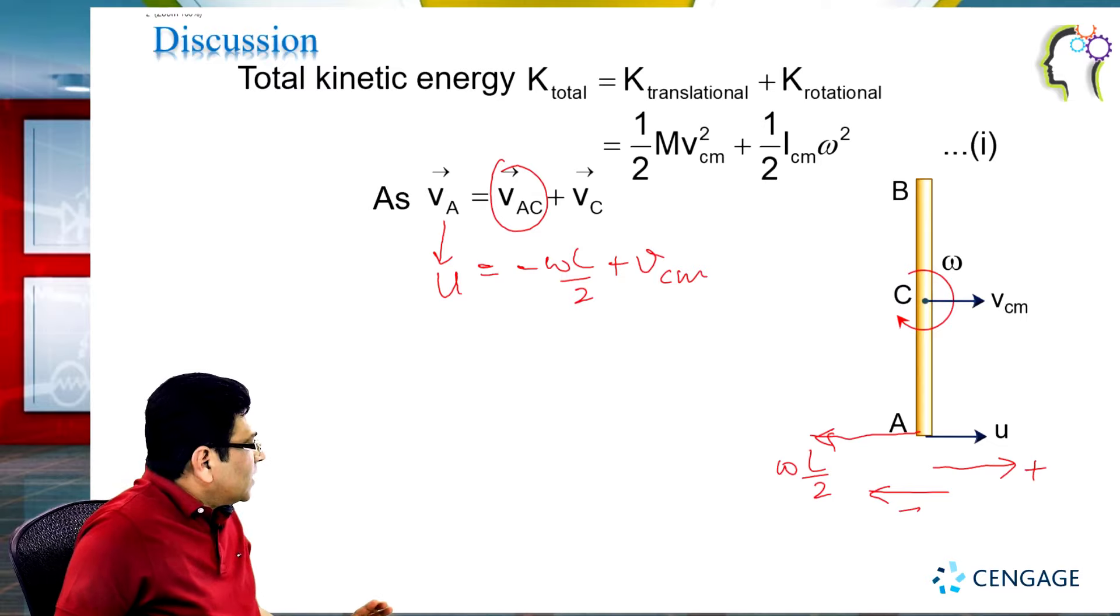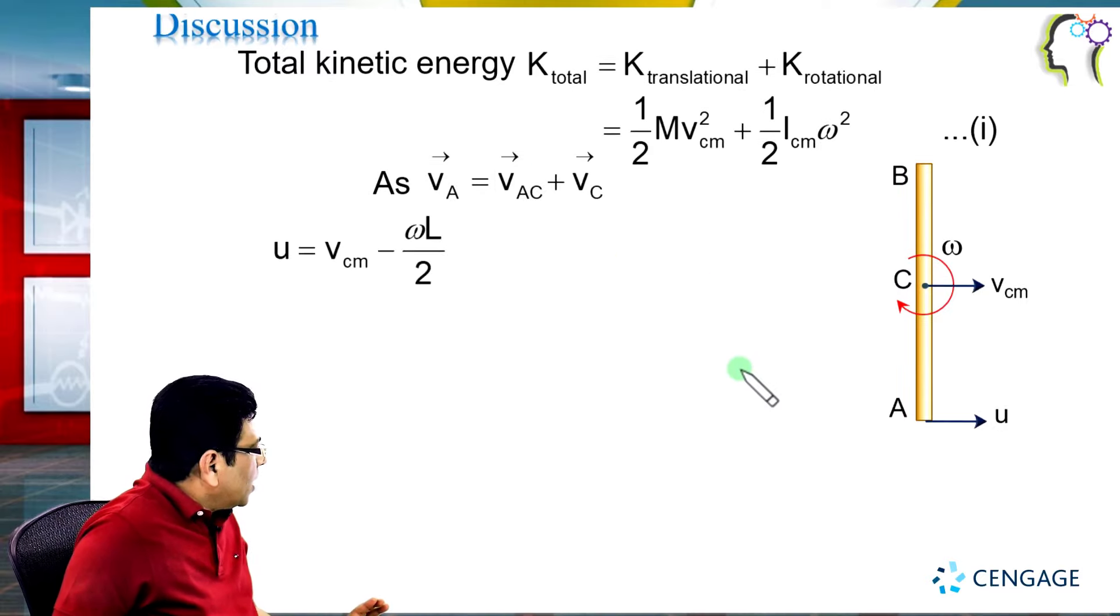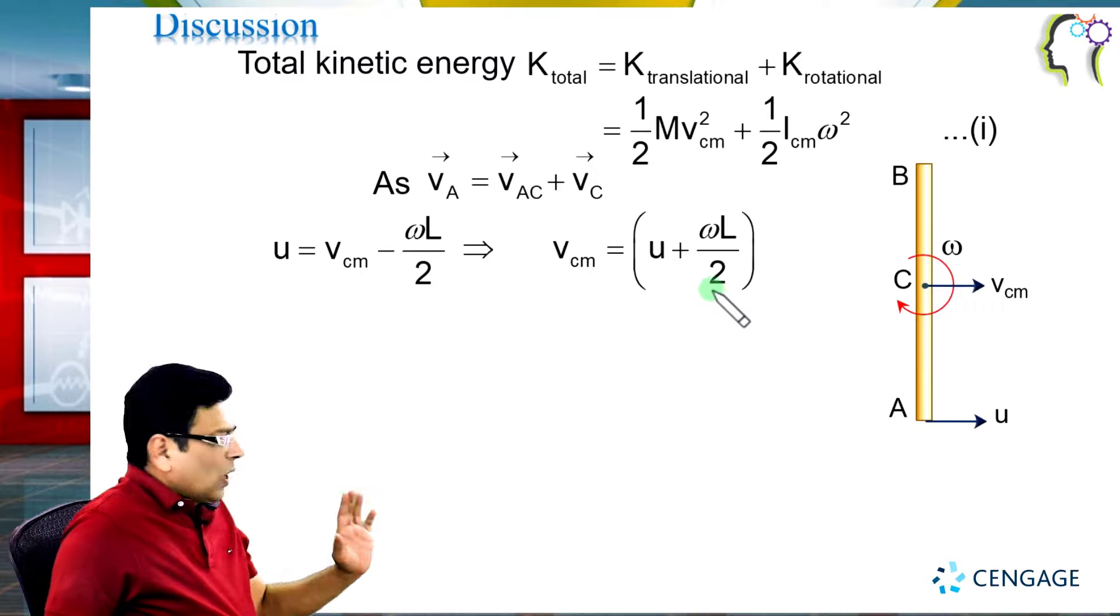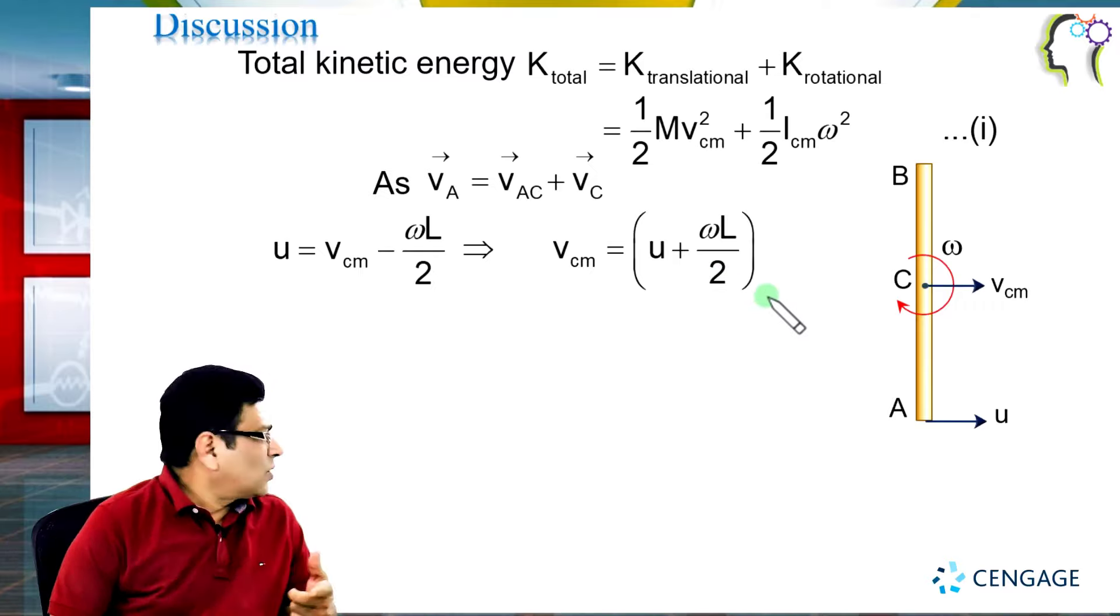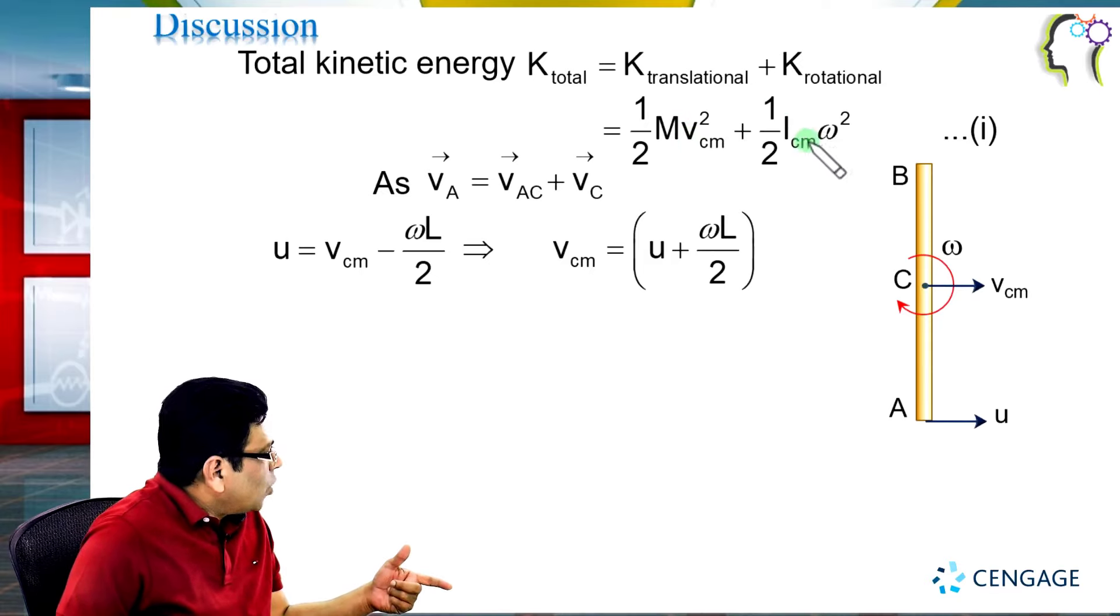We can rearrange this equation. I'm rearranging this equation now. Velocity of CM, the velocity of the center of mass, I will substitute here. And this value we know is 1/12 ML squared. So this is the total kinetic energy.